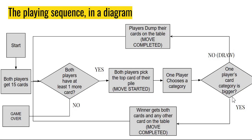On the other hand, if there's a draw situation — for example, the height for both buildings is equal and height was the chosen category, or the number of years it took to build is equal — then there's a draw. The move is completed, but this time the cards go to the table cards. We come back to the beginning and ask the same question again. Once this move is over, the table cards will be given to the player who wins the next move.